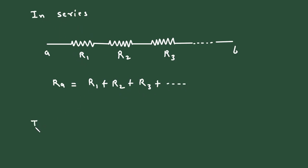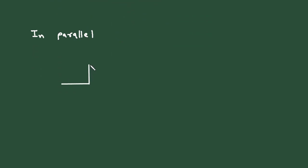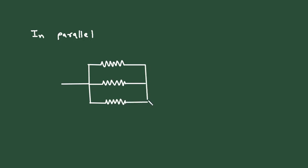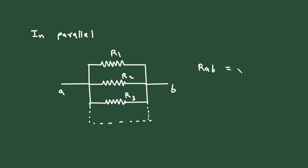Then in parallel — when resistances are connected in parallel, this is called a parallel circuit. Let us say this is A and this is B. For this circuit, let us say this is R1, this is R2, R3, and so on. Then RAB equals 1 divided by (1/R1 plus 1/R2 plus 1/R3 plus so on).